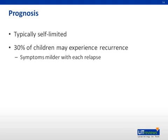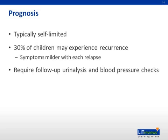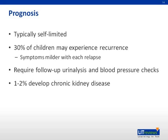The primary long-term complication is renal disease. Therefore, recommended follow-up includes urinalyses and blood pressure checks once every one to two weeks for the first two months after the onset of symptoms, and then once every one to two months for the remaining year after the onset of symptoms. Chronic kidney disease develops in one to two percent of children with HSP.